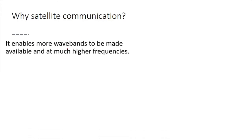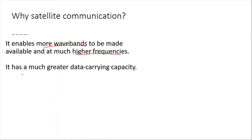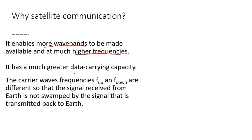Satellite communication enables more wave bands to be made available at much higher frequencies. In satellite communication we have more wave bands and we can communicate at higher frequencies. The data capacity is much higher, and the carrier wave frequencies for uplink and downlink are different.